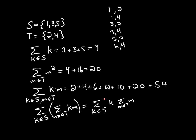Okay. And I'm summing over this whole thing. So all I did was I pulled the k out there because I'm not summing over k. So this is the sum over all k in S of k times the sum of the elements in T. Well, that's just 2 plus 4. That's 6.